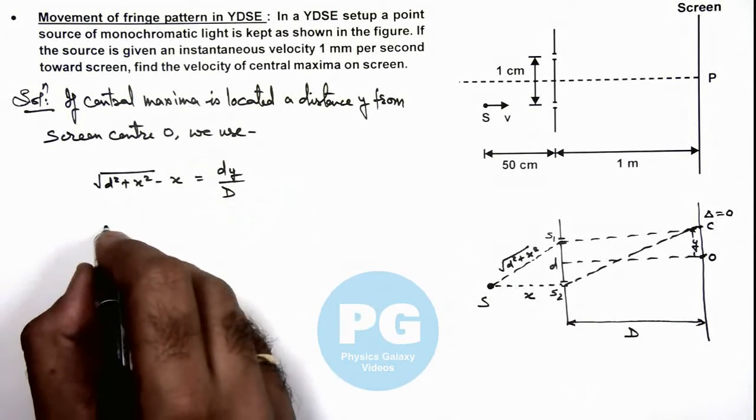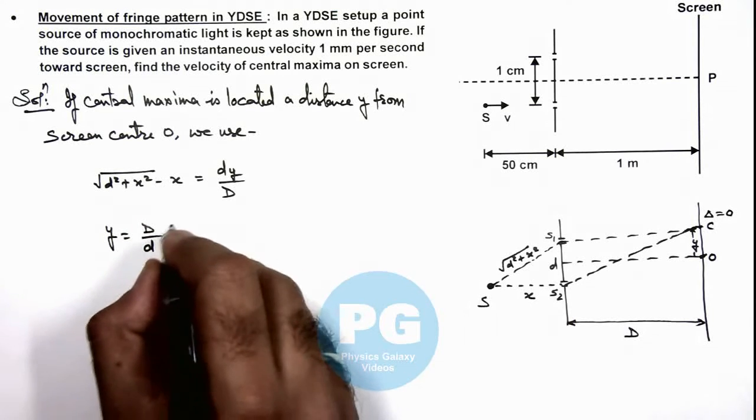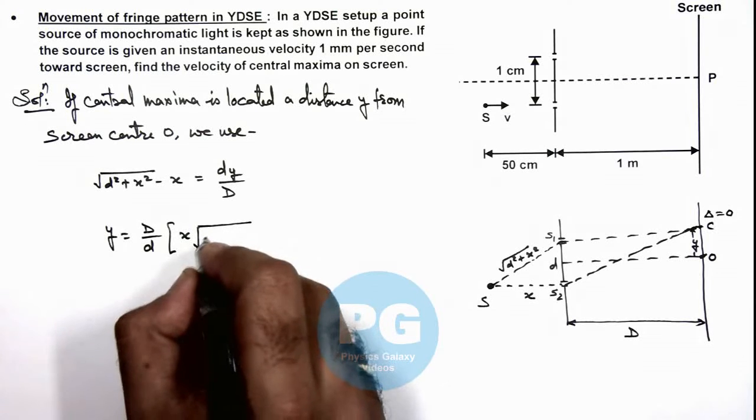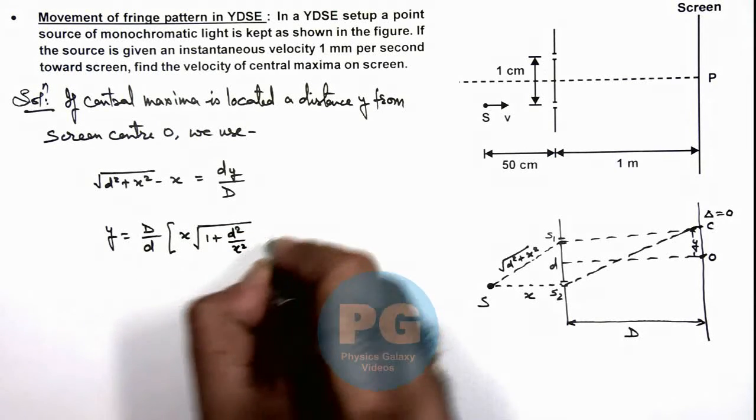We'll get the value of y as capital D by small d, multiplied by x root of 1 plus d squared by x squared, minus x.